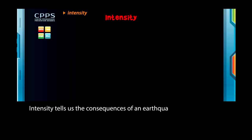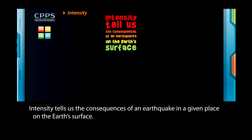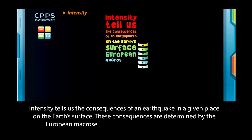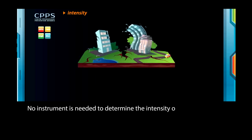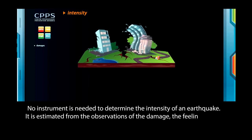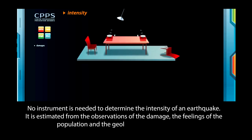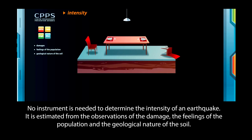Intensity tells us the consequences of an earthquake in a given place on the Earth's surface. These consequences are determined by the European macro-seism scale that comprises 12 degrees. No instrument is needed to determine the intensity of an earthquake. It is estimated from the observations of the damage, the feelings of the population, and the geological nature of the soil.